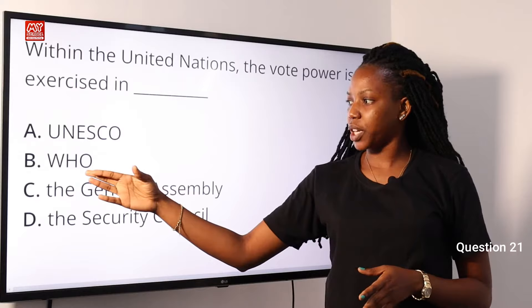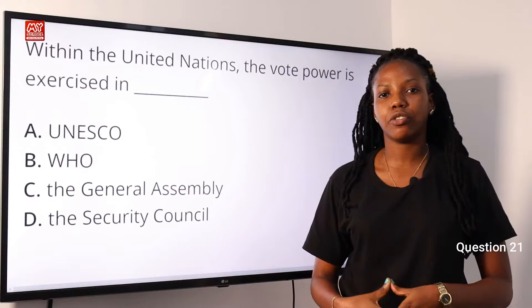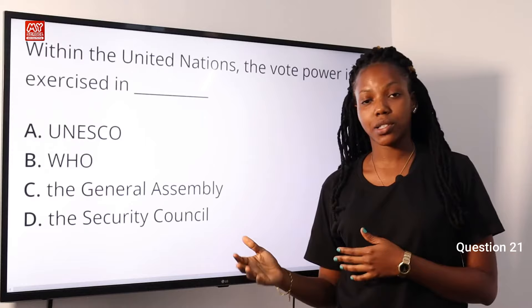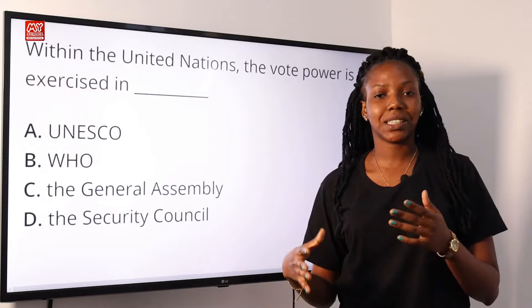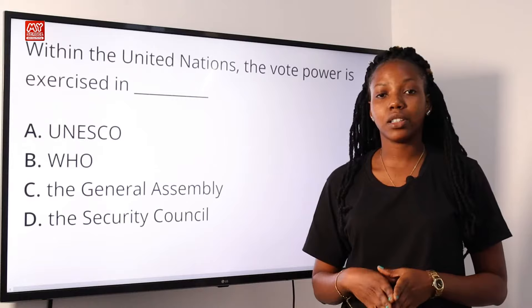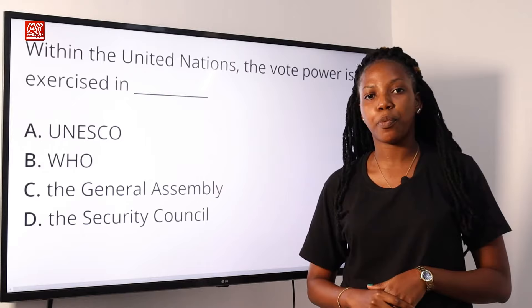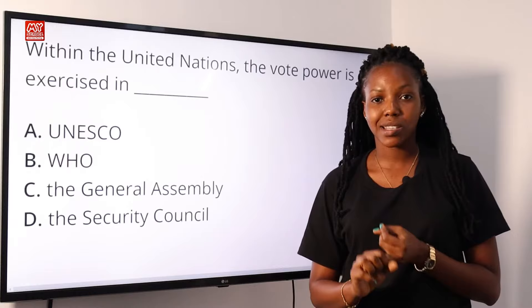Option B, World Health Organization, was founded on the 7th of April 1948 and its primary role is to direct international health issues. Option C, the General Assembly, is an organ of the United Nations and it is the body responsible for policy making. Option D, the Security Council, is another organ of the United Nations and it is made up of five permanent members: China, France, Russia, United Kingdom, and the United States of America.